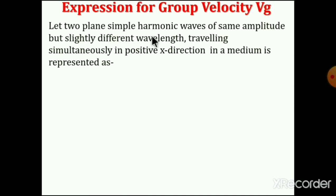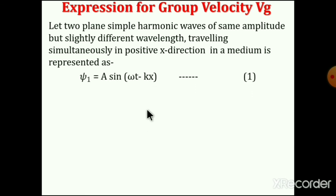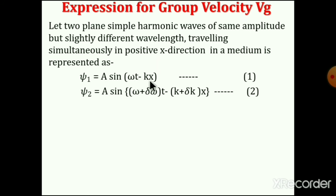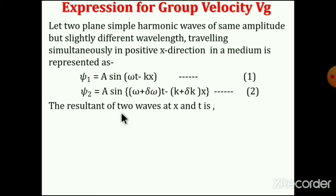Now we derive the expression for group velocity vg. For that purpose, we consider two plain simple harmonic waves of the same amplitude but slightly different wavelengths, both traveling simultaneously in the positive x direction in a given medium. These two waves are represented by: ψ₁ = A sin(ωt − kx) and ψ₂ = A sin[(ω + δω)t − (k + δk)x]. When the two waves superimpose, we get a resulting amplitude-modulated wave: ψ = ψ₁ + ψ₂.